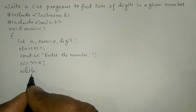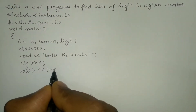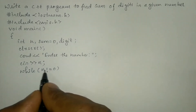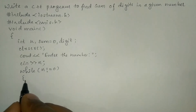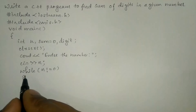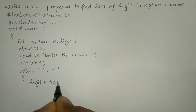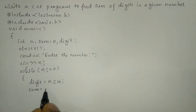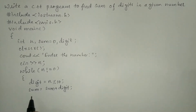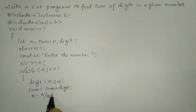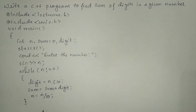While is a keyword and it should be written in lowercase letters only. We are going to check the condition whether n is not equal to zero. If it is not equal to zero, the control enters into the body of the while loop. The curly open brace indicates the beginning of the body of the while loop. Here I'm going to write: digit = n % 10, then sum = sum + digit, then n = n / 10, and then the curly closing brace indicates the termination point of the while loop.